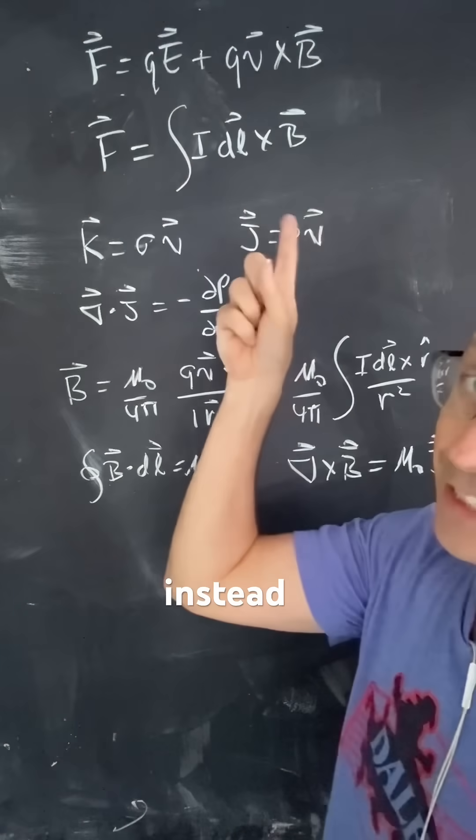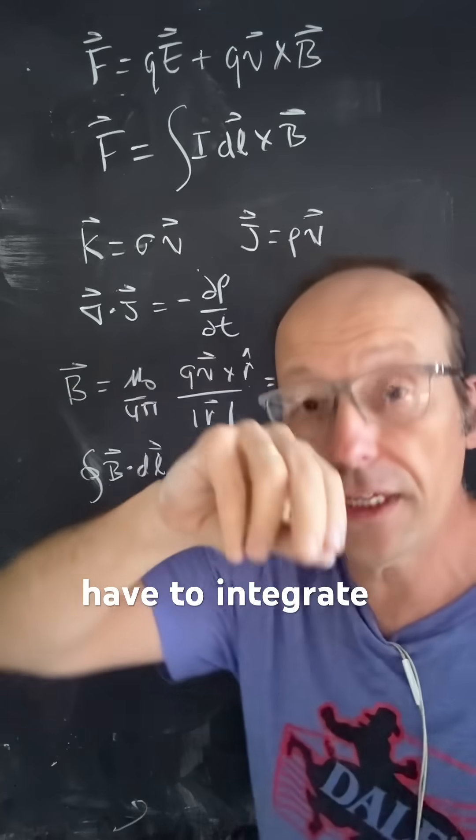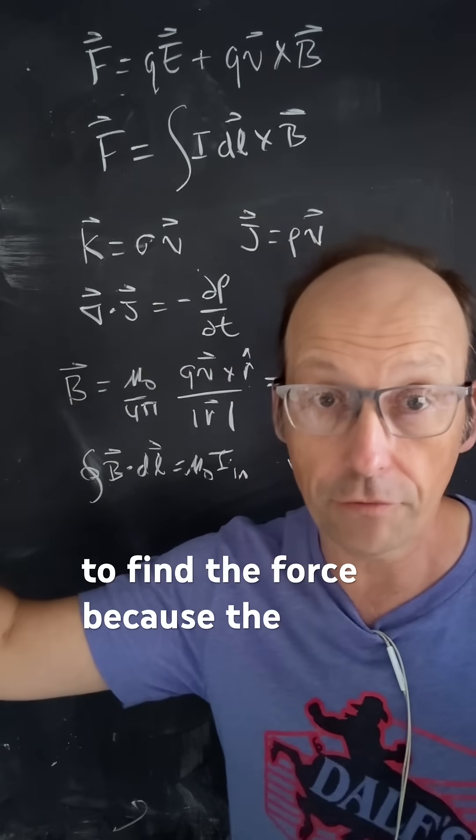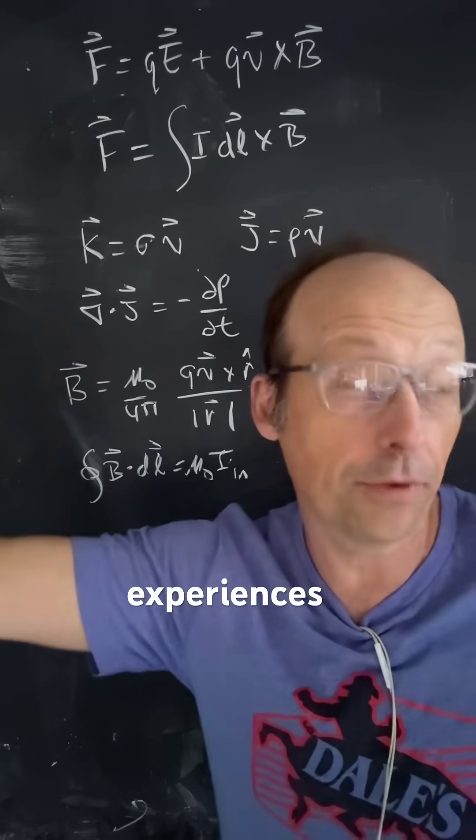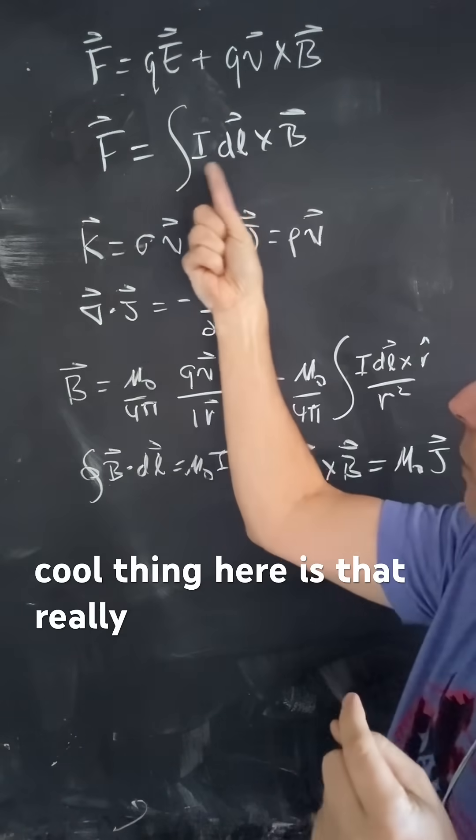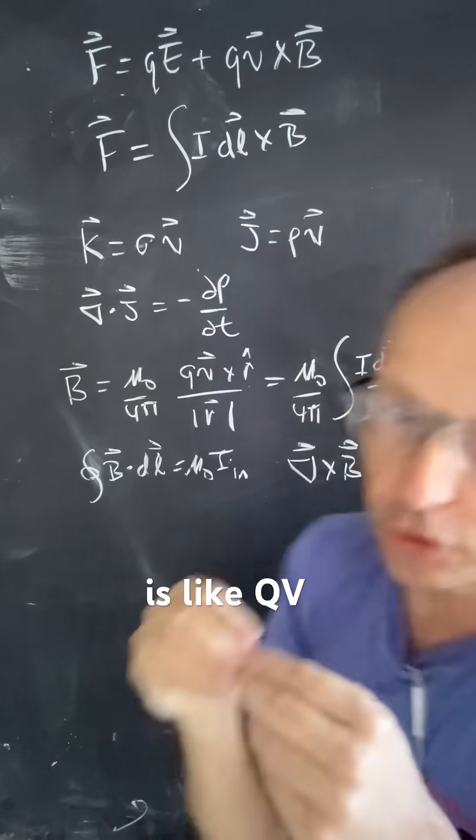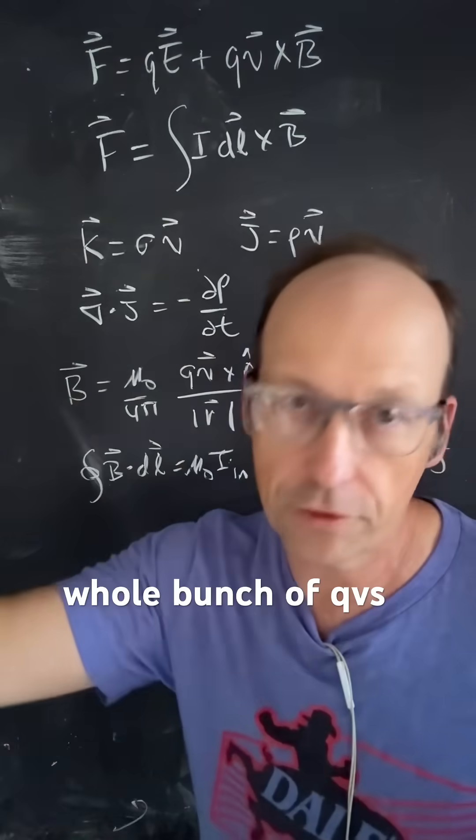Now, if you have a current instead of a wire, you have to integrate over that whole wire to find the force, because the whole wire experiences the force. But the cool thing here is that really IDL is like QV. But now you have a whole bunch of QV, so you have to integrate.